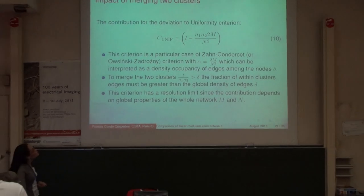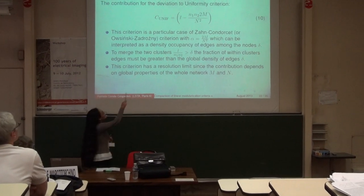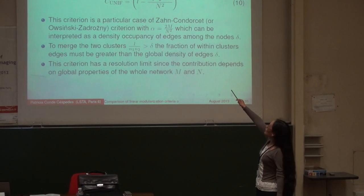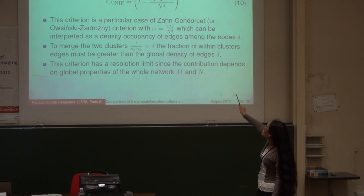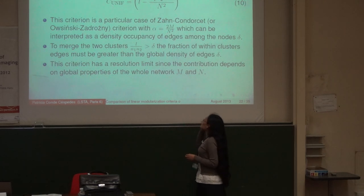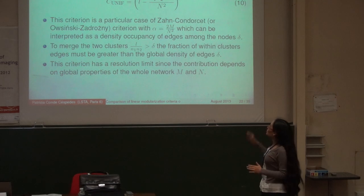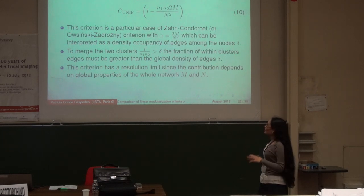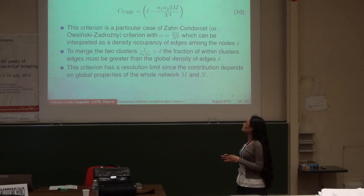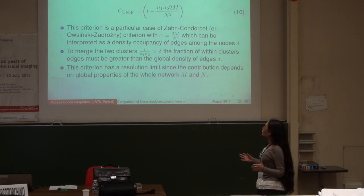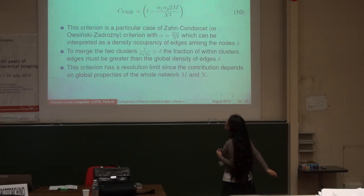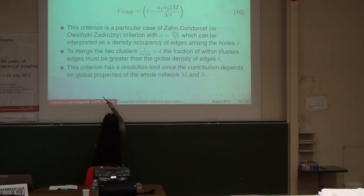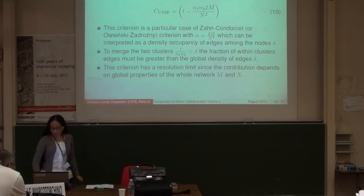The contribution for the deviation to uniformity shows that this criterion is only a particular case of the convinced criterion, where alpha is equal to delta. Delta is 2m divided by n squared, which is the density of edges of the whole graph. For the fusion to take place, the criterion requires that the density of edges between the two subgraphs must be at least equal to the density of edges of the whole graph. This criterion has a resolution limit because the contribution depends on n and m.